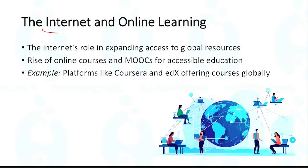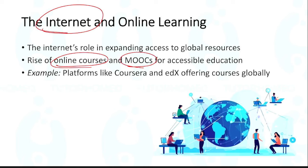Then came the internet. The internet expanded access to education to a massive population. People who were not able to go to school were able to get access to education through the internet. Online courses opened up — MOOC, that is Massive Open Online Courses, which democratized access to education. Nowadays you see advertisements for Coursera, edX, Udemy, and Unacademy — these are all massive open online courses which anyone can take through the internet.